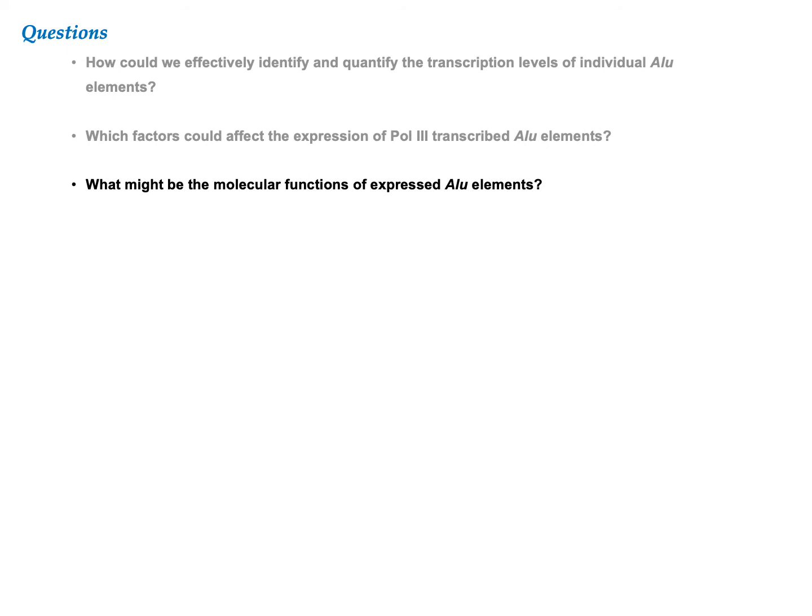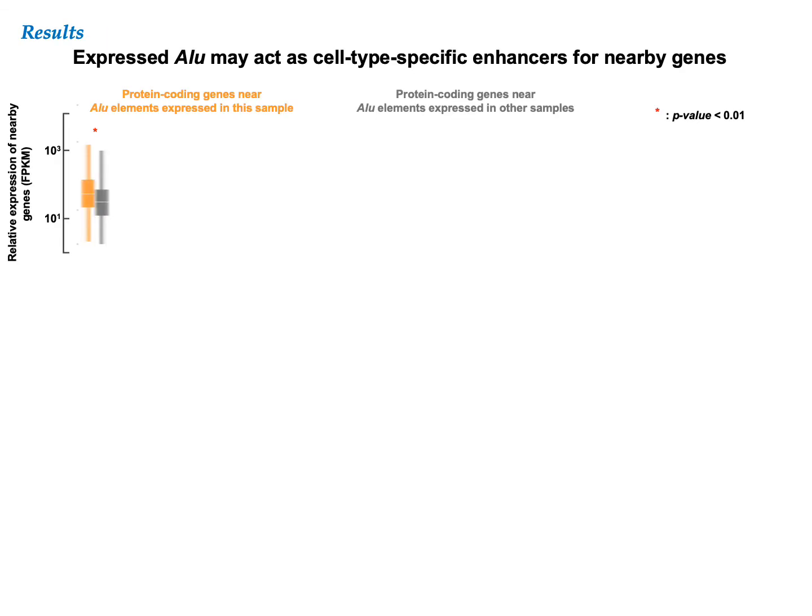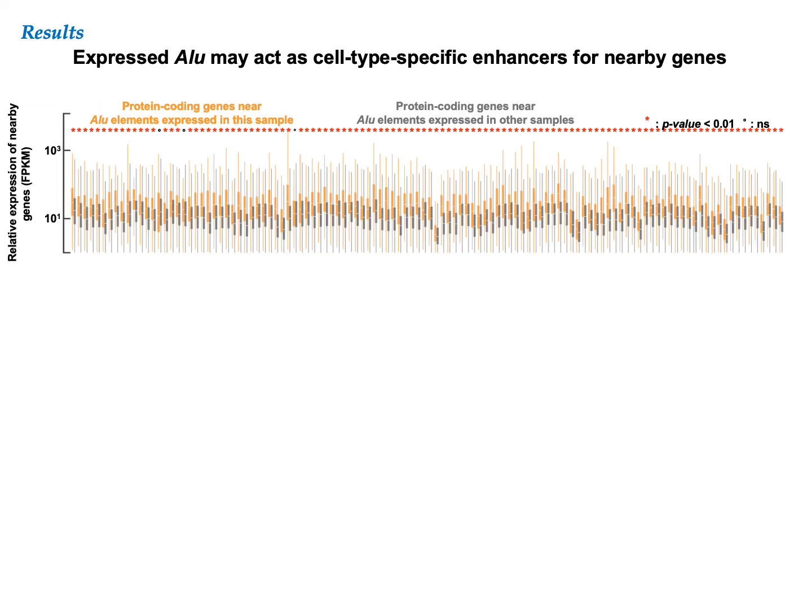We move on with our third question: what might be the molecular functions of expressed Alu elements? We first compared the expression levels of the protein-coding genes near Alu elements using RNA-seq data from the same sample as the RAMPAGE data. We identified two sets of protein-coding genes: those near expressed Alu elements in that particular sample, and those near Alu elements unexpressed in that sample but were expressed in another sample with RAMPAGE data. These two sets of protein-coding genes are illustrated in yellow and gray respectively, and a red asterisk above the box plot indicates that the genes near expressed Alu elements had significantly higher expression.